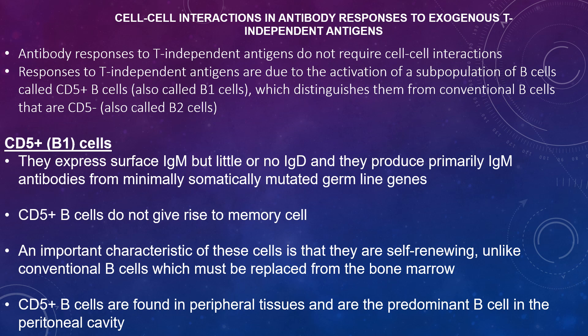B1 cells, often called CD5-positive cells, are the first B cells to appear in ontogeny. They express surface IgM but little or no IgD, and primarily produce IgM antibodies from minimally somatically mutated germline genes. Antibodies produced by these cells are of low affinity and are often polyreactive, meaning they bind multiple antigens. Most of the IgM in serum is derived from CD5-positive B cells, which do not give rise to memory cells. These cells are self-renewing, unlike conventional B cells which must be replaced from bone marrow. They are found predominantly in the perinatal peritoneal cavity and are a major defence against many bacterial pathogens that characteristically have polysaccharides in their cell walls. The importance of these cells is illustrated by the fact that many individuals with T cell defects are still able to resist many bacterial pathogens.